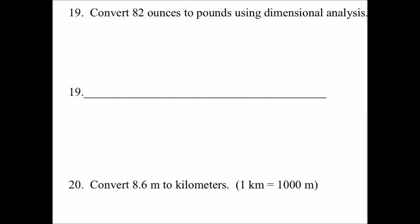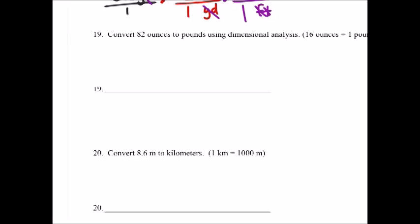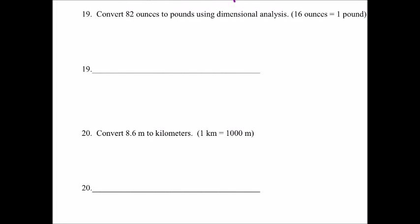Convert 82 ounces to pounds using dimensional analysis. They told us that 16 ounces is one pound, so we've got 82 ounces and we're going to multiply this by something over ounces, and we can see it's pounds. One pound is as good as 16 ounces, and that cancels out the ounces, which is what we wanted.